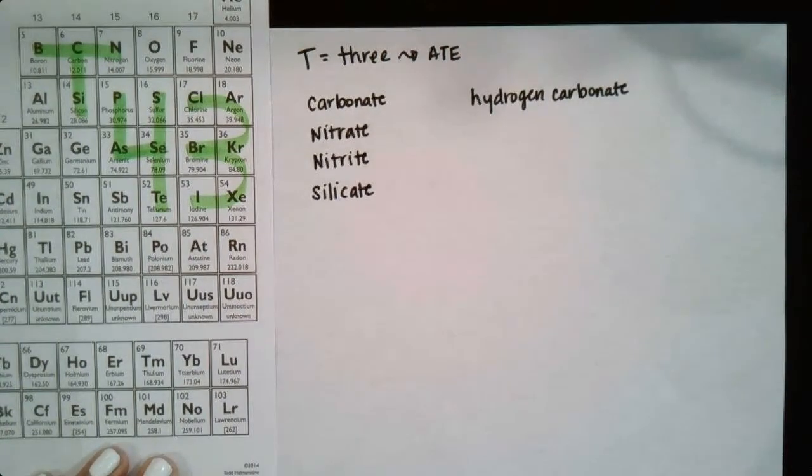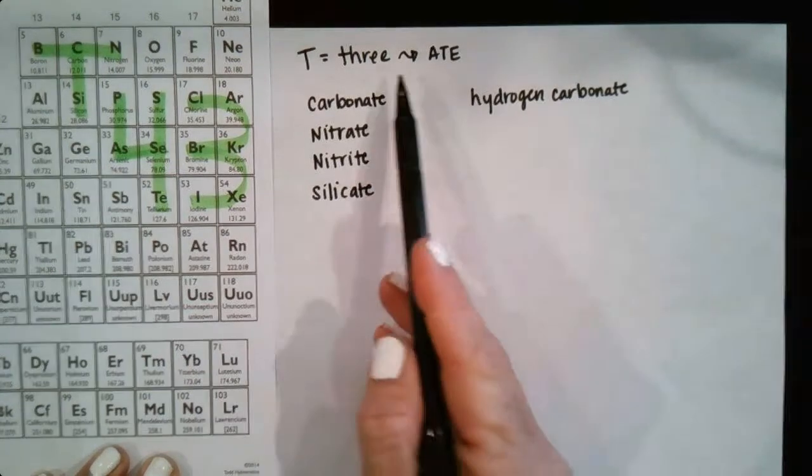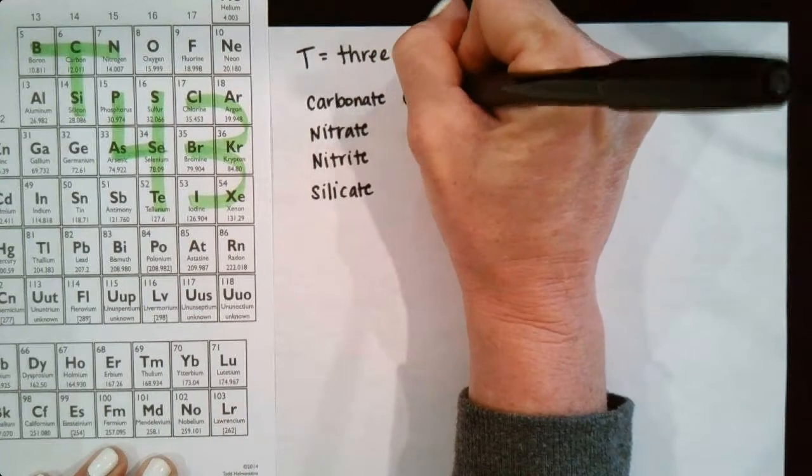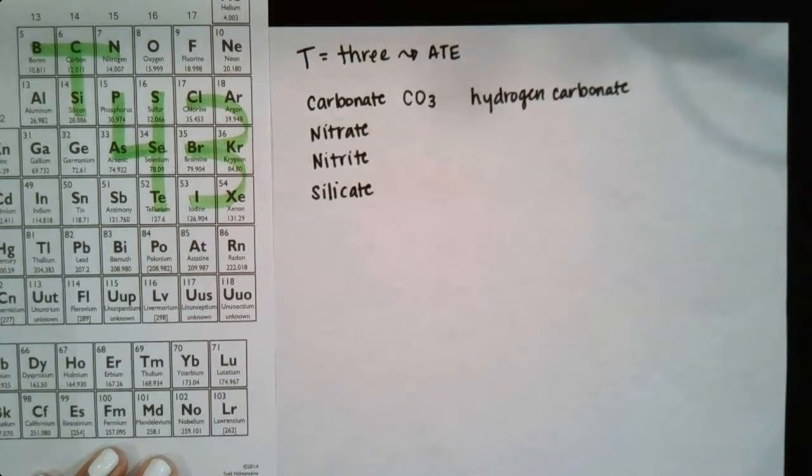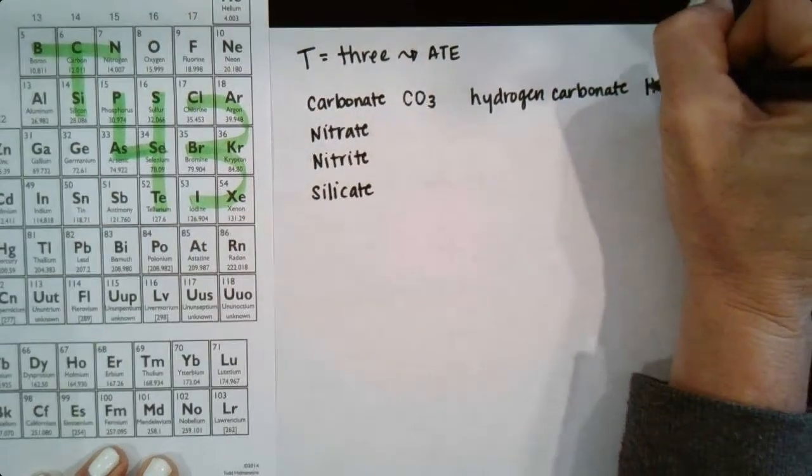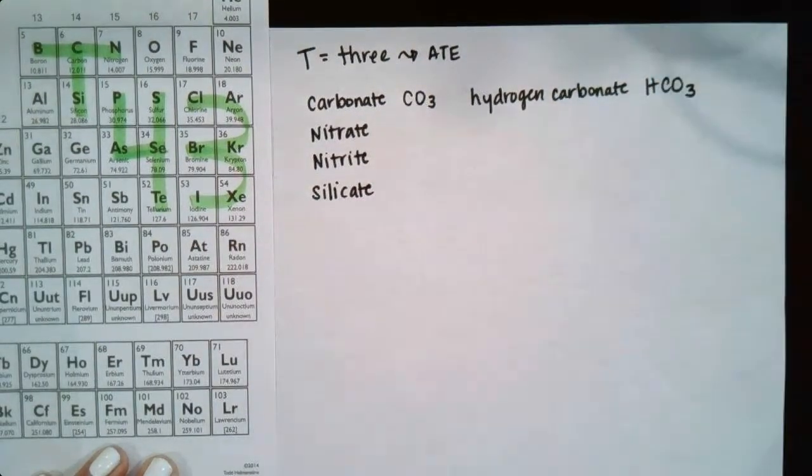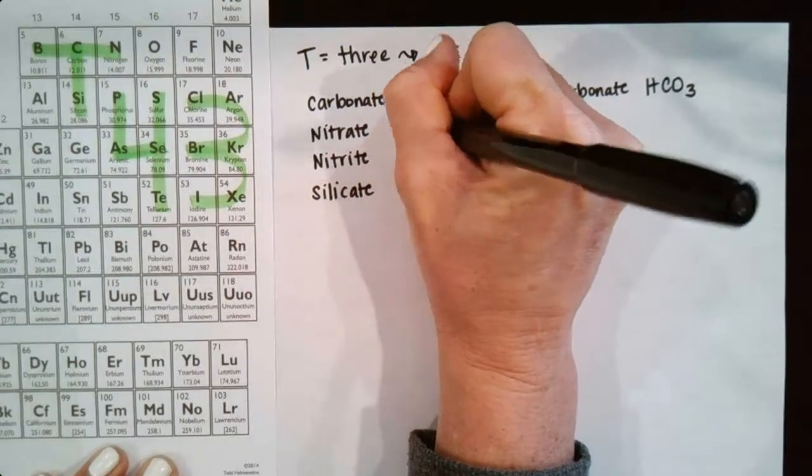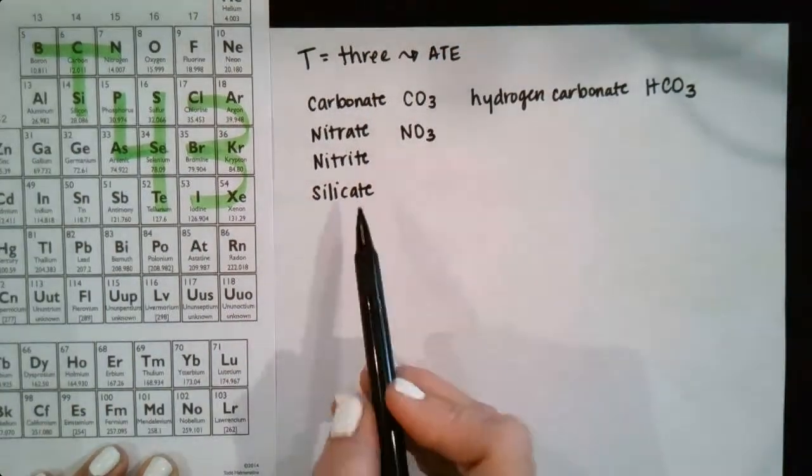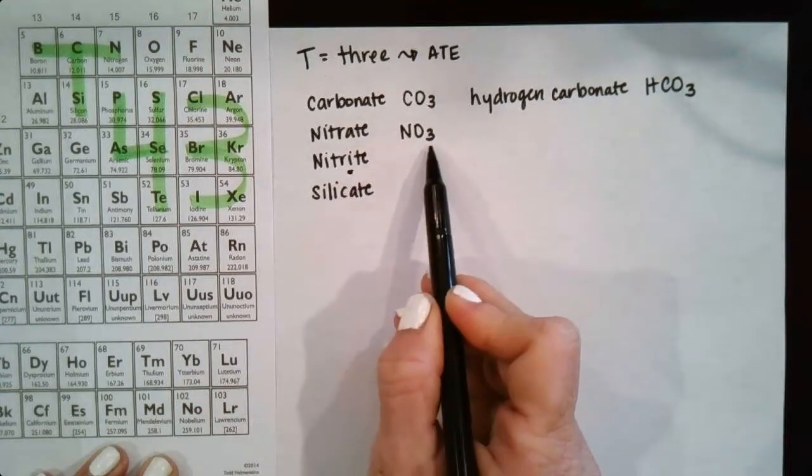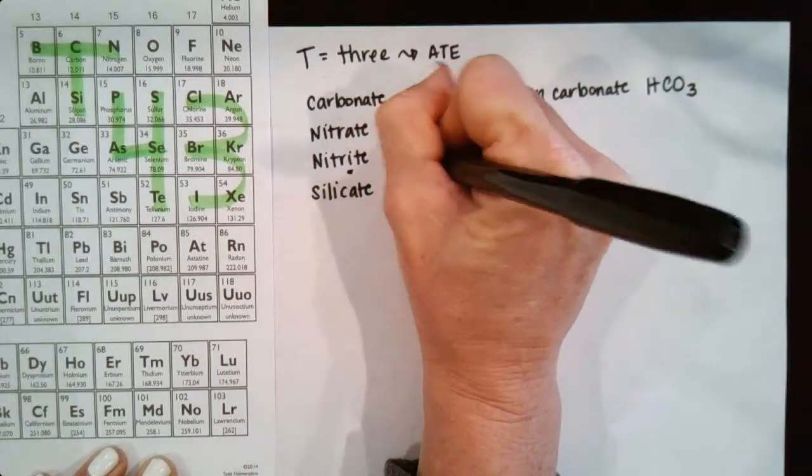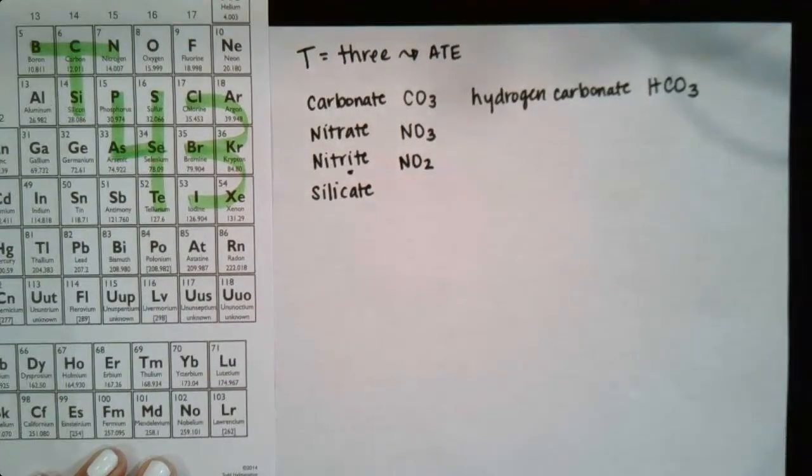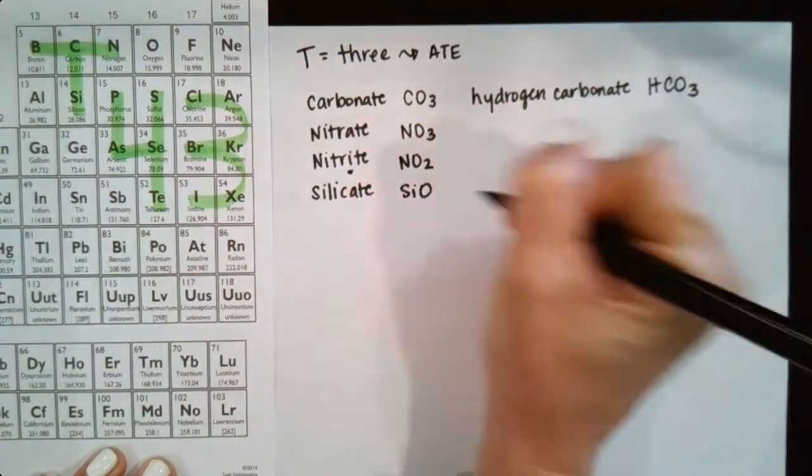So out of this T group we get these polyatomic ions, and so what the T is telling me is that my carbonate is going to be CO3 because it's three. So we get CO3. Hydrogen carbonate is always just an H with the same formula. Nitrate is going to be NO3, and then whenever we have a nitrite, we subtract an oxygen, so that's going to be NO2, and then lastly silicate is SiO3.